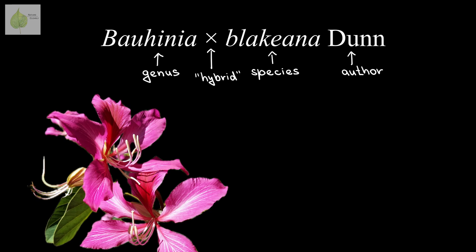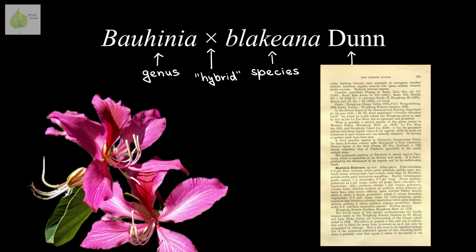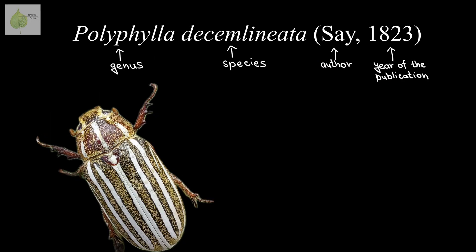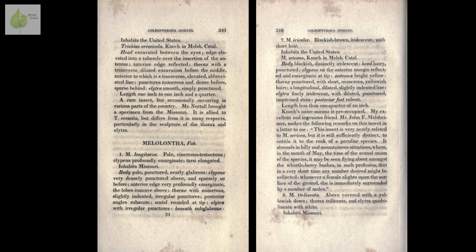Let's practice with some examples. Pohinia ×blackiana was described by Dunn; thanks to the author name we can trace the publication with the original description, which is from 1908. Next, we have the beetle Polyphylla decemlineata. The fact that the author's name and year are in parentheses means it was later moved to its current genus — but it doesn't tell us by whom. Remember, in zoology those authors are omitted from the authorship, so we don't see who moved it to the current genus. However, we can look up the original publication from 1823 to find out that the species was originally described in the genus Melolontha.